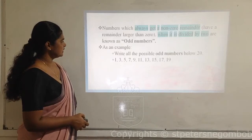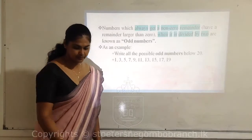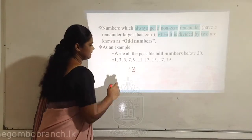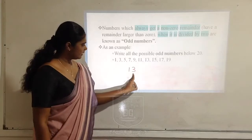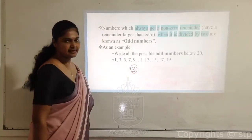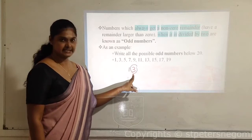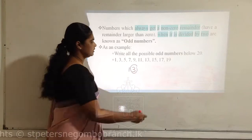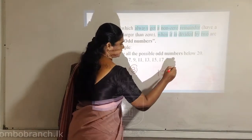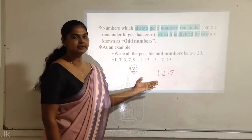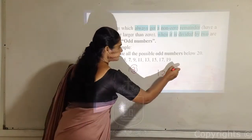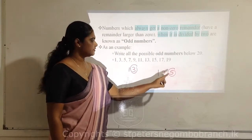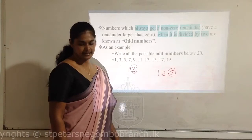One more thing: even when you get a number like 13, which is made with two digits, you have to look at the last digit. If the last digit is an odd number, automatically the whole number is odd. Think about 125 — this is a large number made with 3 digits, but since the last digit is the odd number 5, we consider the whole number as an odd number.